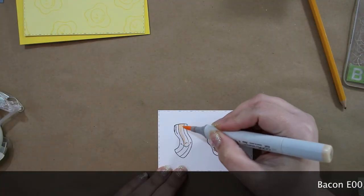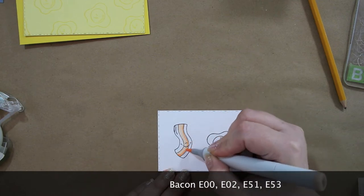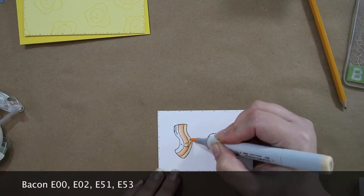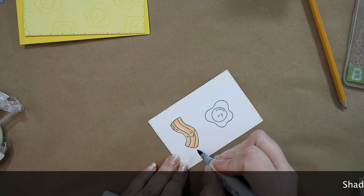Here they are stamped on my white piece of paper. I'm going to color them with Copic markers. Along the bottom of the screen you can see which colors I used. E00 and E02 was the inside of the bacon, and E51 and E53 was the outside of the bacon.